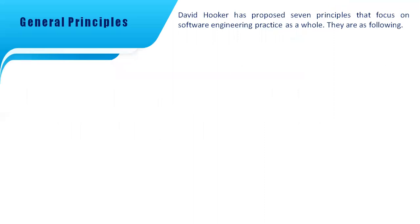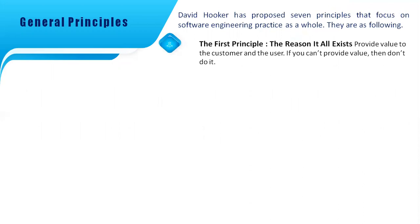David Hook has proposed seven principles that focus on software engineering practice as a whole. These are called general principles. The first principle is that the reason it all exists: a software system exists for one reason — to provide value to its users. Before specifying any system requirements, noting functionality, or determining the hardware platform, we need to ask: does this requirement add any real value to this system? If the answer is no, do not do it. All other principles support this particular law.